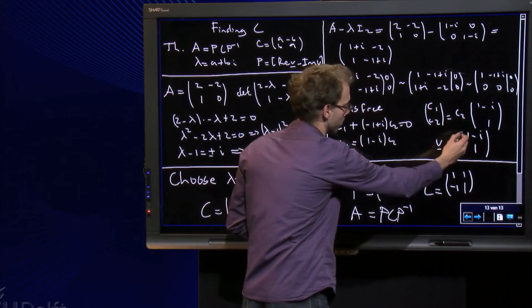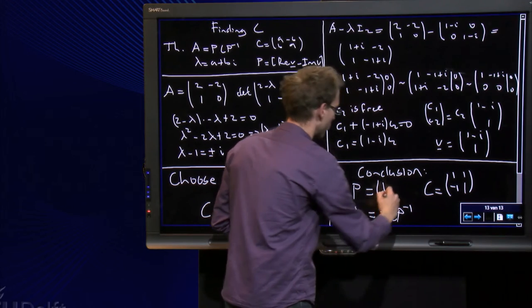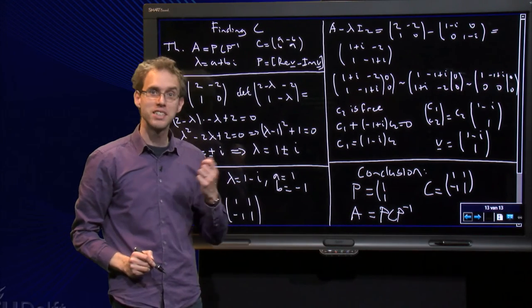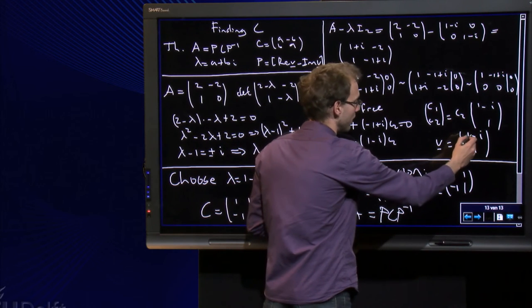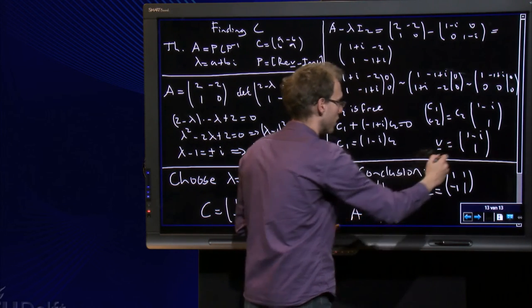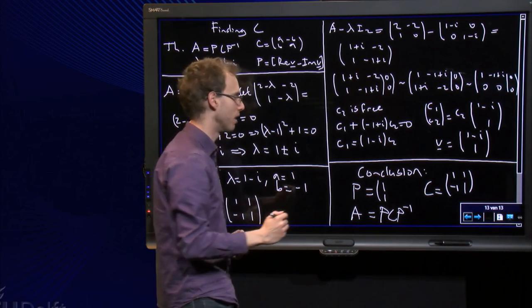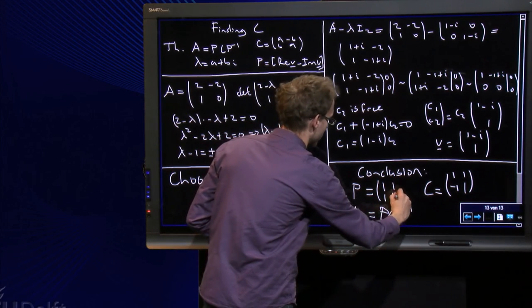That consists of the real part of v as the first column. The real part of v equals (1,1), and minus the imaginary part in the second column. The imaginary part yields (-1,0), so minus the imaginary part gives me (1,0).